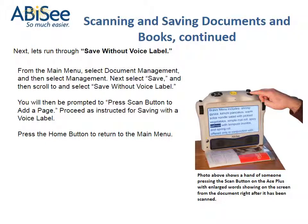Next, let's run through save without voice label. From the main menu, select document management, and then select management. Next select save, and then scroll to and select save without voice label. You will then be prompted to press the scan button to add a page. Proceed as instructed for saving with a voice label. Press the home button to return to the main menu.